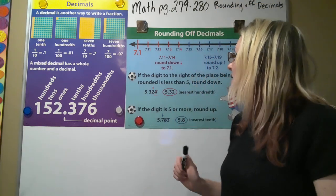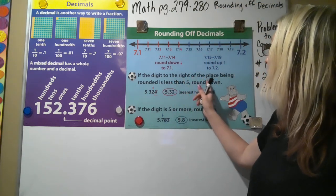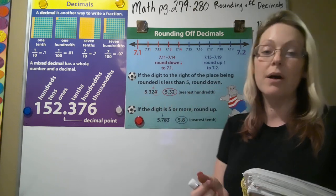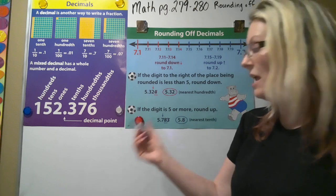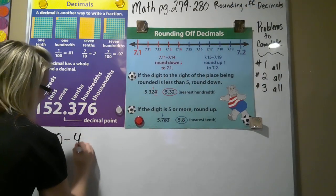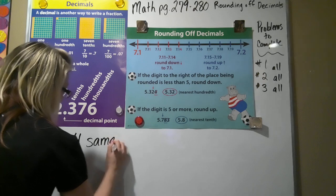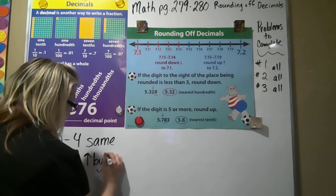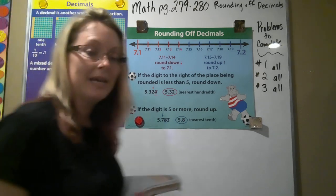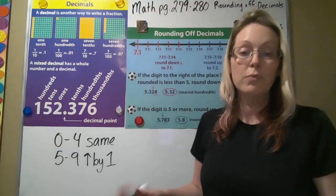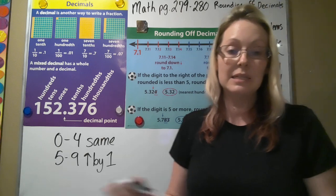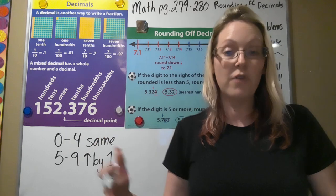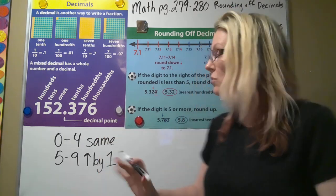If the digit to the right of the place being rounded is less than 5, then we round down. Remember our same thing we've always done: zero to four stays the same, five to nine goes up by one. This is the same thing here, even when you're rounding decimals. You've got to use that same saying.